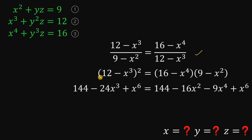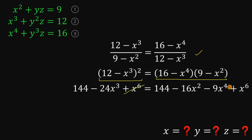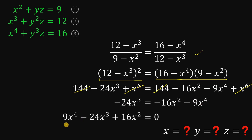So 12 minus x cubed raised to the power of 2 equals 16 minus x to the fourth power, multiplied by 9 minus x squared. Expanding: 12 minus x cubed squared gives us 144 minus 24x cubed plus x to the sixth power, and the right side equals 144 minus 16x squared minus 9x to the fourth power plus x to the sixth power. Combining like terms, subtracting x to the sixth power and 144 from both sides, we simplify the equation.